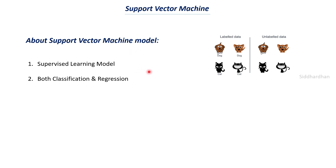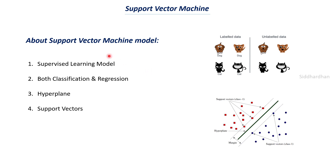Two important terms in support vector machine are hyperplane and support vectors. These are the very basic and fundamental concepts of SVM. The hyperplane and support vectors are the things that define the support vector machine model, so let us try to understand what they mean.